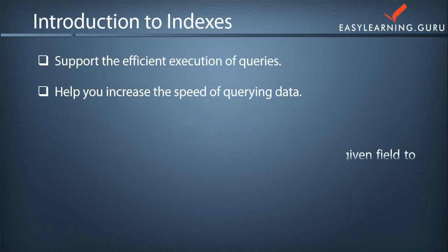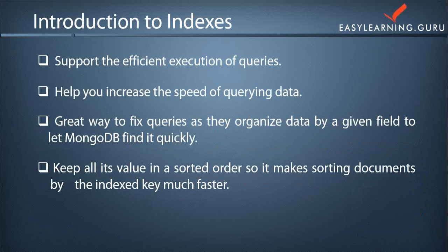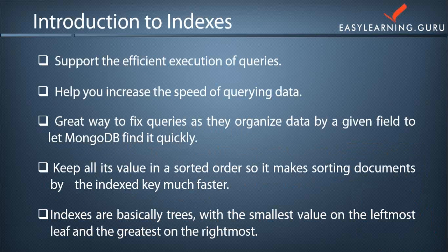Indexes help you increase the speed of querying the data. It is a great way to fix queries as they organize data by a given field to let MongoDB find it quickly. It keeps all its values in a sorted order, so it makes sorting documents by the index key much faster. Indexes are basically trees with the smallest value on the leftmost leaf and the greatest on the rightmost leaf — similar to the data structures we call trees.